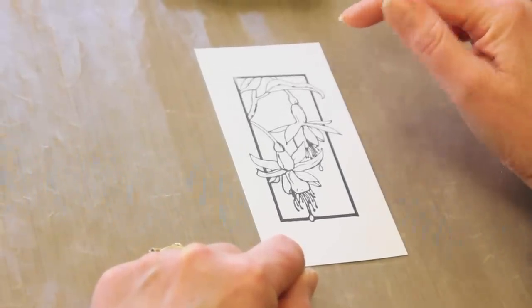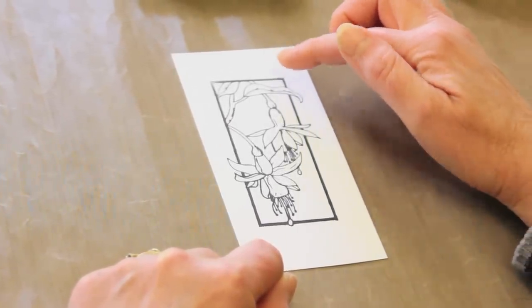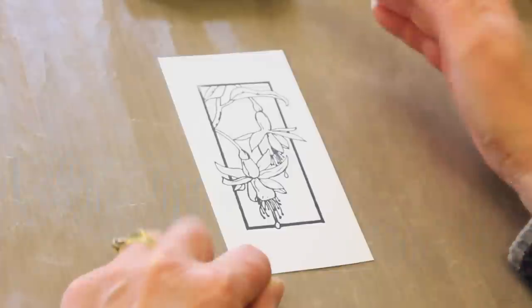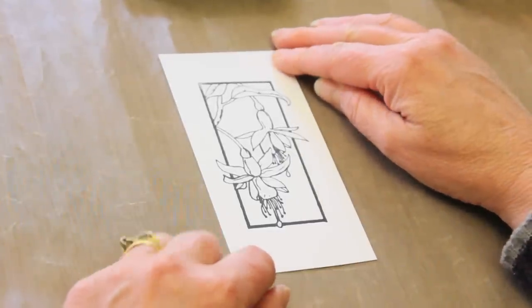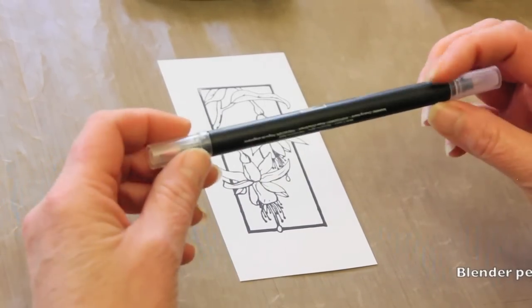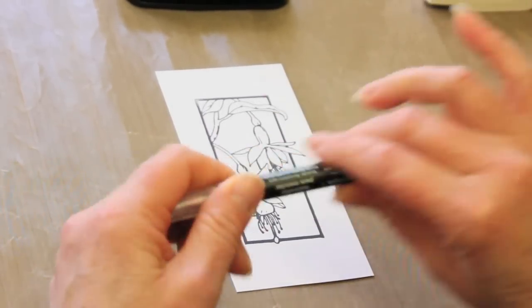You have to be careful when you're stamping your original image that you choose an ink that's a permanent ink, so it won't bleed in when you start adding ink and water and things like that. On this piece of cardstock we're going to use a blender pen.